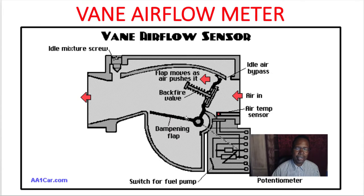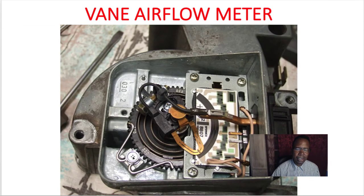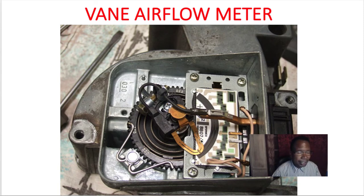This is the vane door right here — this whole plate rotates across the resistor as air moves through it. While it's rotating, the computer can tell how much air is flowing through the engine. But that's just measuring the air volume going through the engine.